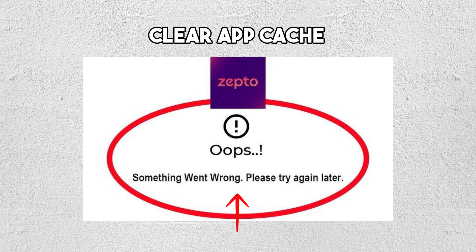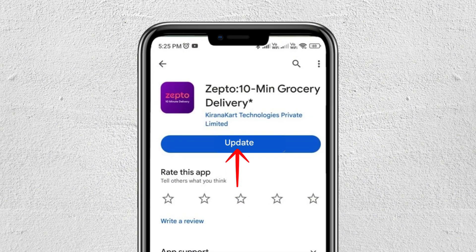For Android, go to Settings, tap on Apps, then go to Zepto, then Storage, and select Clear Cache. For iOS, just uninstall and reinstall the application to clear the cache.